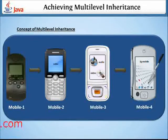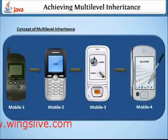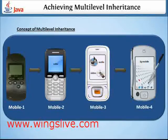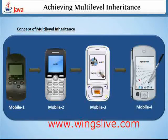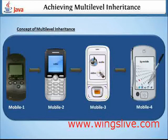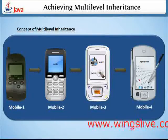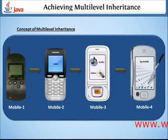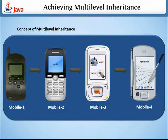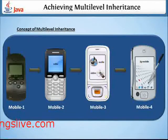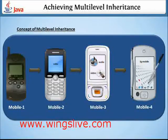Finally, the fourth mobile inherits all the features of the first, second, and third, but it has its own special features like 3G, touchscreen, internet, and many more. So I hope you now know the basic concepts of multi-level inheritance.